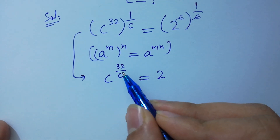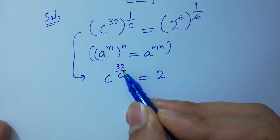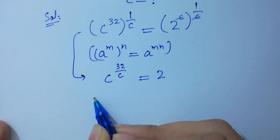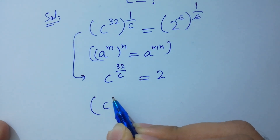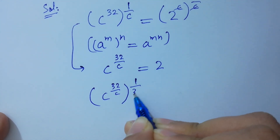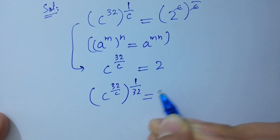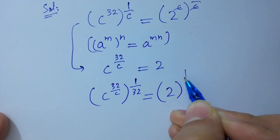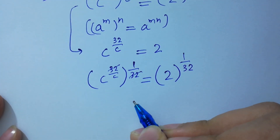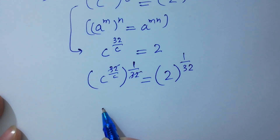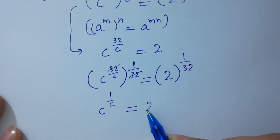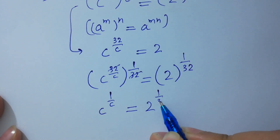Next, to get rid of this 32, take power 1 over 32 on both sides. Here, C to the power 32 over C, to the whole power 1 over 32, equals 2 to the power 1 over 32. Here 32 and 32 will be cancelled. We get C to the power 1 over C equal to 2 to the power 1 over 32.